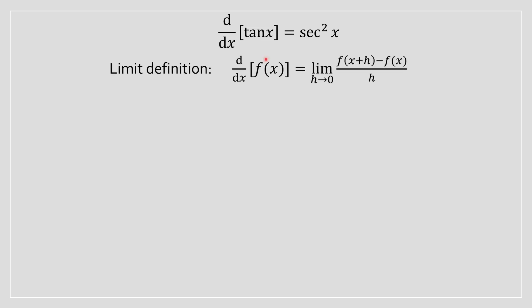Right, so to prove this, the derivative of tan x, why it equals secant squared of x, we're going to have to apply the limit definition. And in this case, the f(x) function is tan of x. So the first thing, let's rewrite it in terms of the limit definition. It's going to resemble something that looks like this.